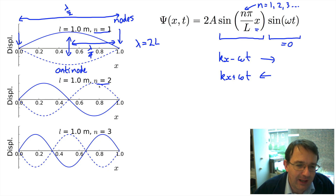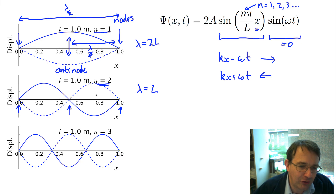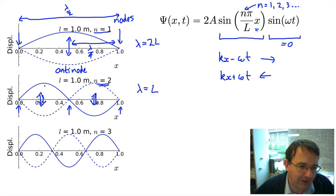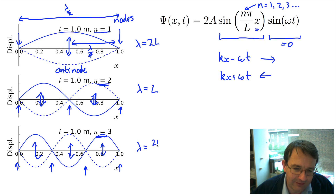For n = 2, the wavelength equals L, and there is now a node in the middle as well as at both ends. We have two antinodes, one on either side, and when the string is displaced upward at one antinode it is displaced downward at the other. For n = 3, there are two nodes in the center plus the end nodes, with antinodes in between, and the wavelength is 2L/3.